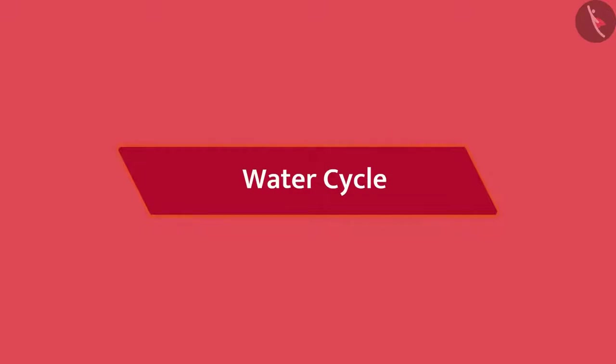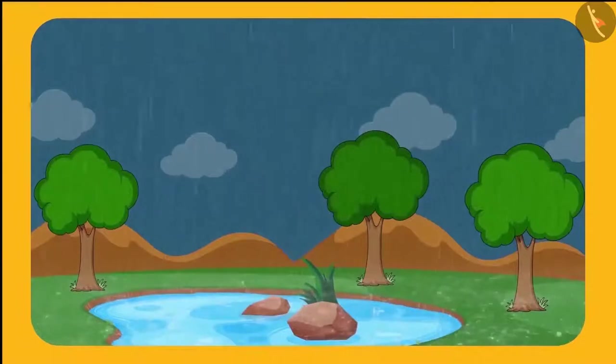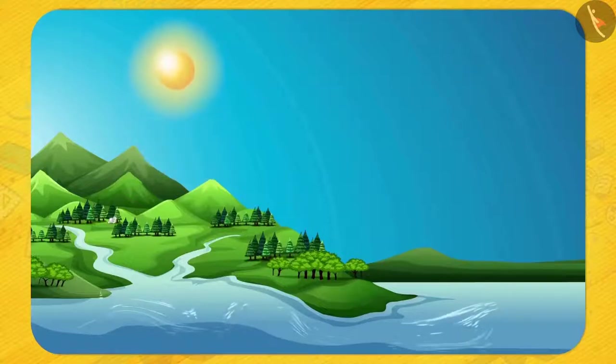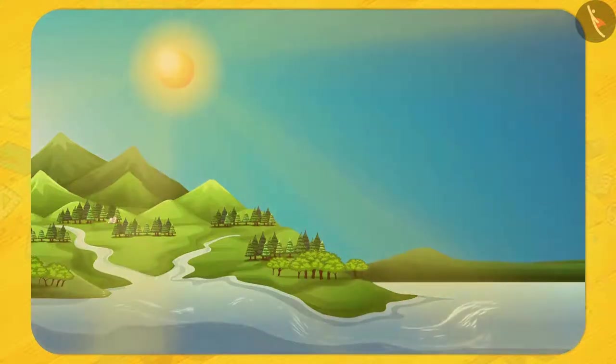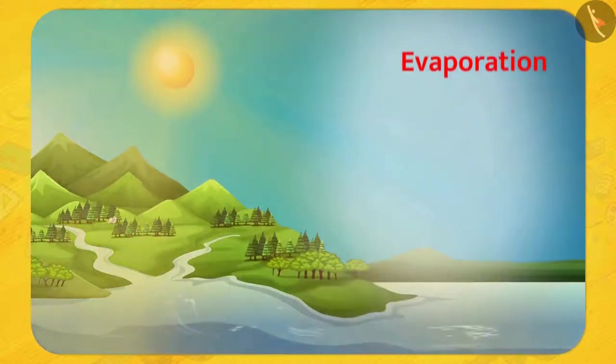Friends, we all like rain, but how does rain occur? Let's understand. Due to sunlight, the surface of water bodies gets heated up and gets converted to water vapor. This process is called evaporation. But how does this water vapor go into the sky? Think.